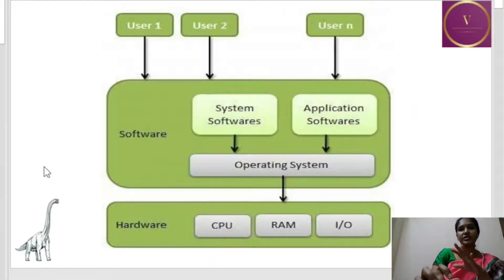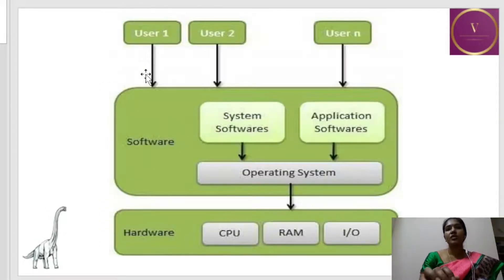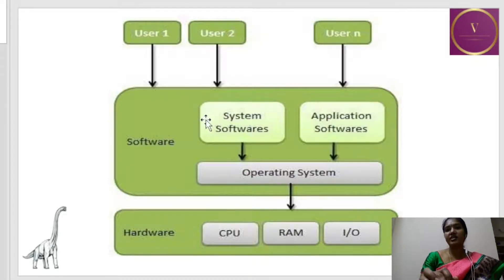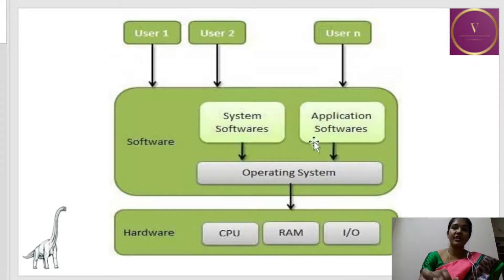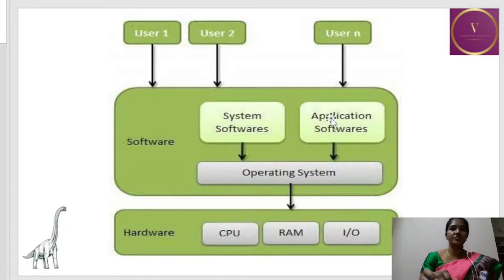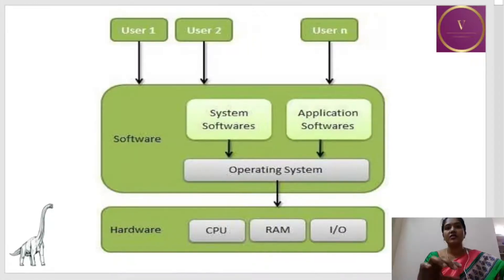There is one more pictorial representation. In this, software is divided into system software and application software. System software includes the operating system, assemblers, and compilers. Application software includes games, word processors, PPT, and everything.